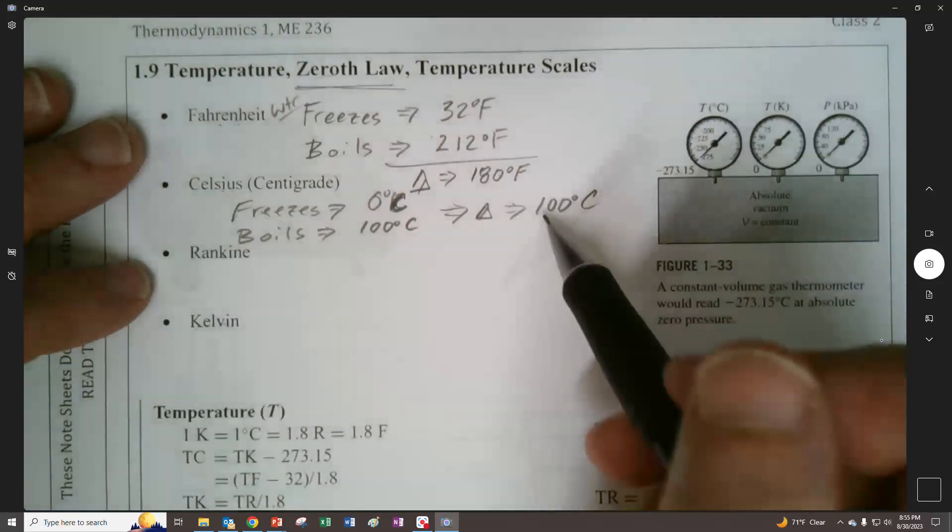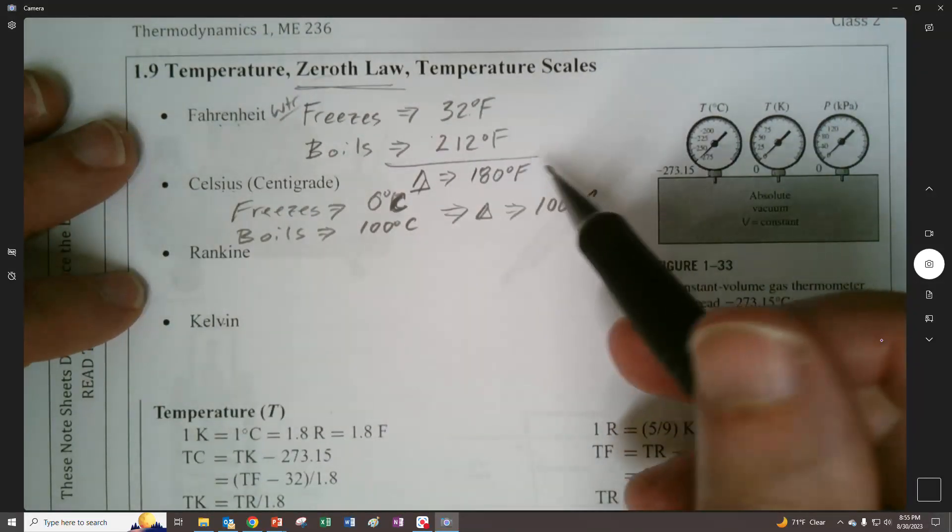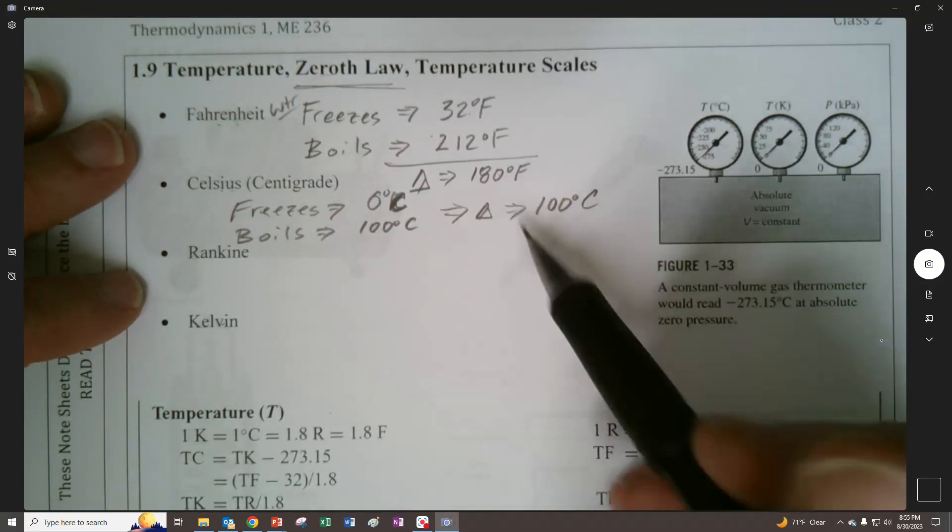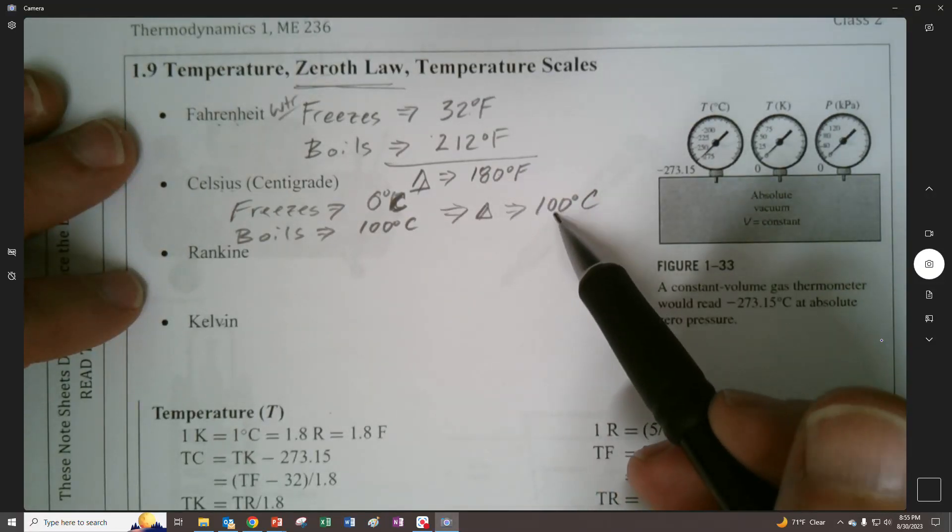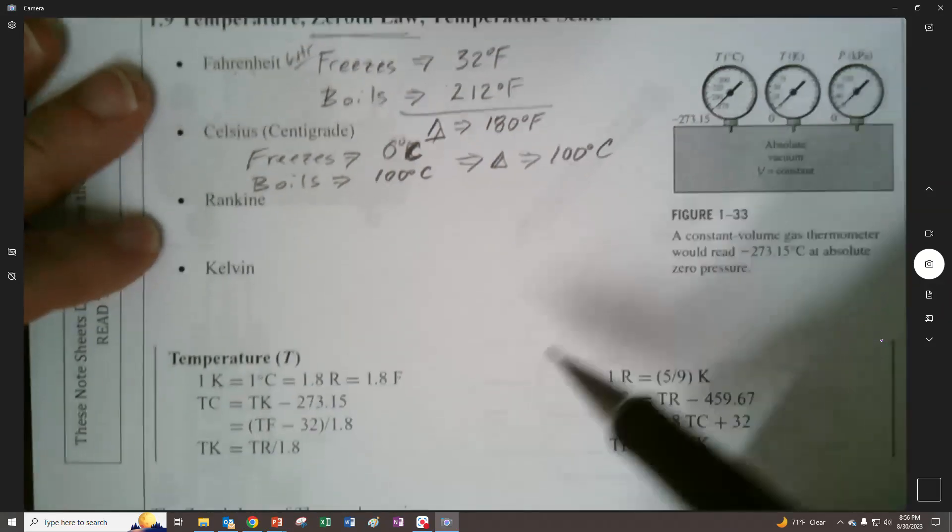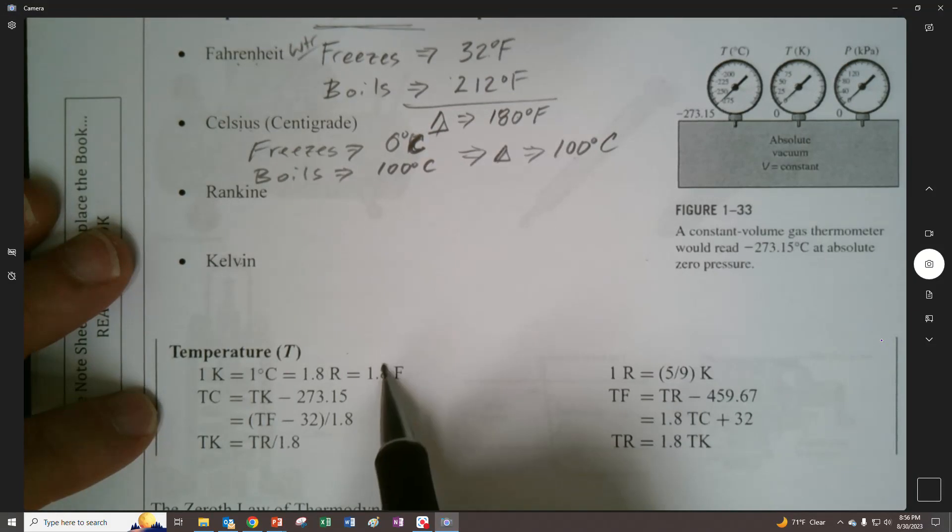So the delta is 100 degrees Celsius. Well, if you take a look at these two things right here, and you look at it down below, you take a ratio of it, 180 over 100, you get like 1.8, right? Well, look down at these conversion factors. You get 1.8.